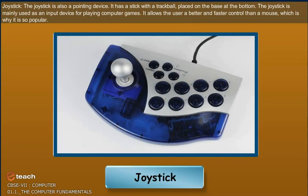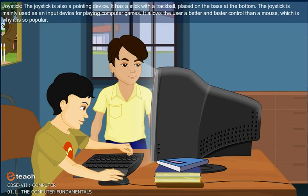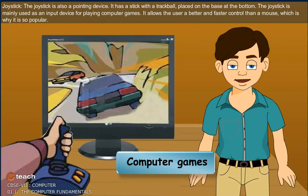Joystick: The joystick is also a pointing device. It has a stick with a trackball placed on the base at the bottom. The joystick is mainly used as an input device for playing computer games. It allows the user a better and faster control than a mouse, which is why it is so popular.